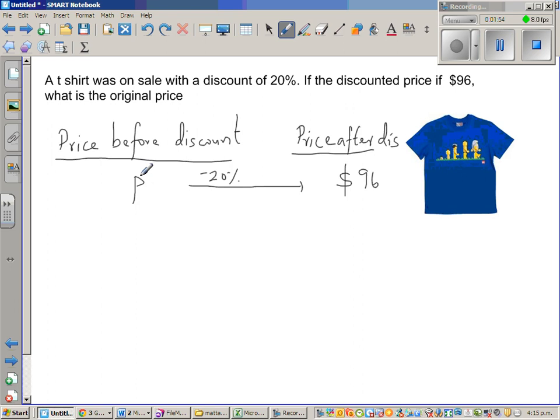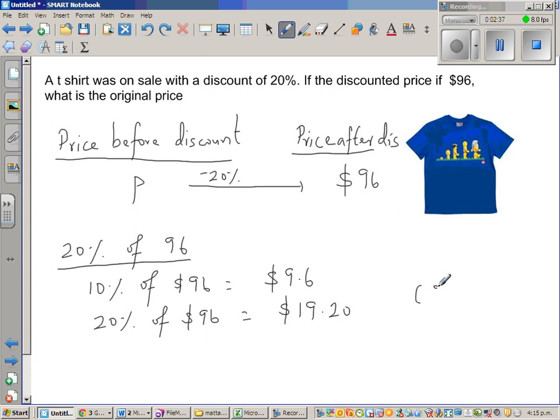You think well if I find 20% of 96 and if I add to this will I get this? So let us find 20% of 96. 10% of 96 dollars is one-tenth of this which is $9.60. 20% of 96 is $19.20. Or you can do like this 9.6 plus 9.6 which is 18 plus 1, 19.